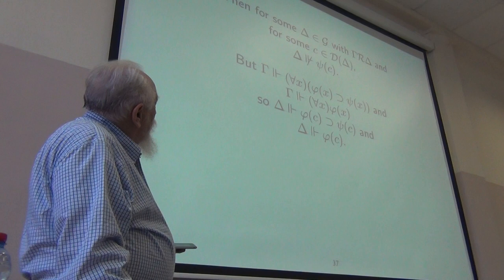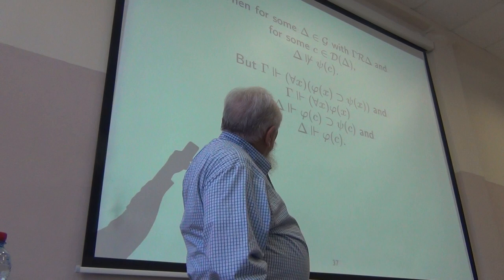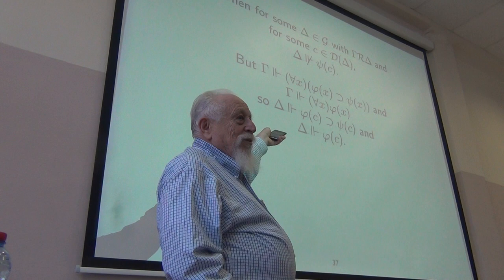But for all x, this implication is true at gamma. So at delta, every instance available at delta has to be true because delta is accessible. So phi of C implies psi of C is true.